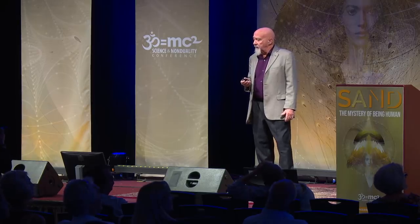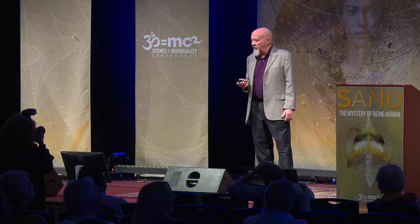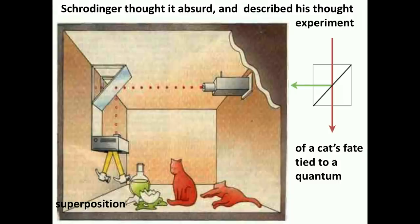Now, Schrodinger thought that this idea was absurd. And he described his thought experiment of a cat's fate tied to a quantum superposition. And the idea was that on the right side you see a quantum, like a photon passing through a half-silvered mirror. It will both go through the mirror and be reflected. If it's reflected, it will, this is Schrodinger's thought experiment, Schrodinger's cat, it will enter this box, trigger a poison to kill the cat. Because it's a quantum superposition on the outside, it both goes through and is reflected. Therefore, according to the Copenhagen interpretation, the cat would be both dead and alive until somebody looked at the cat. And only at that instant would it be either dead or alive.